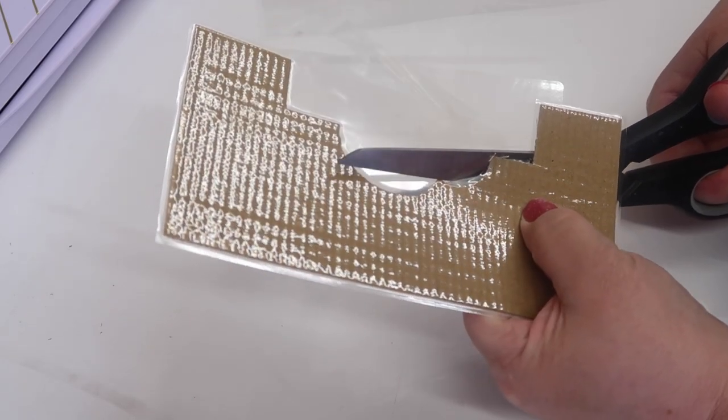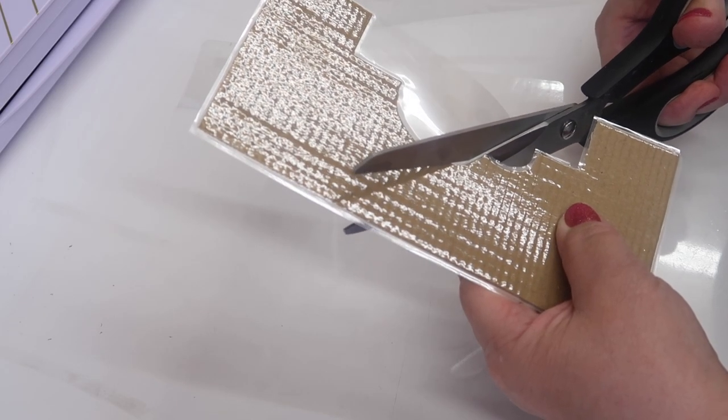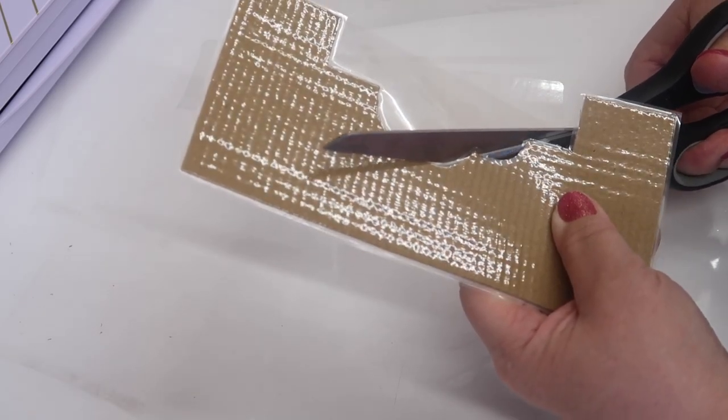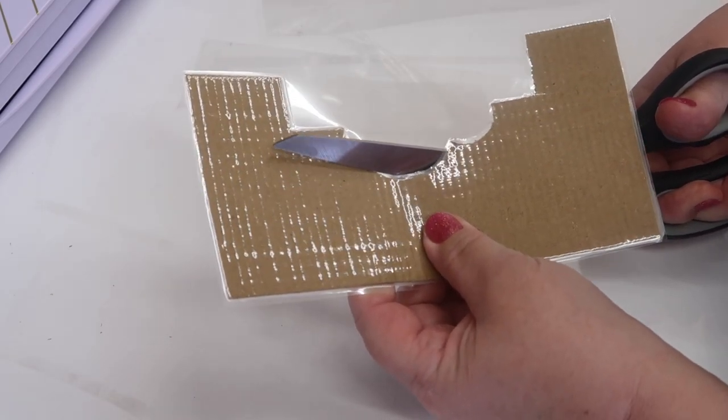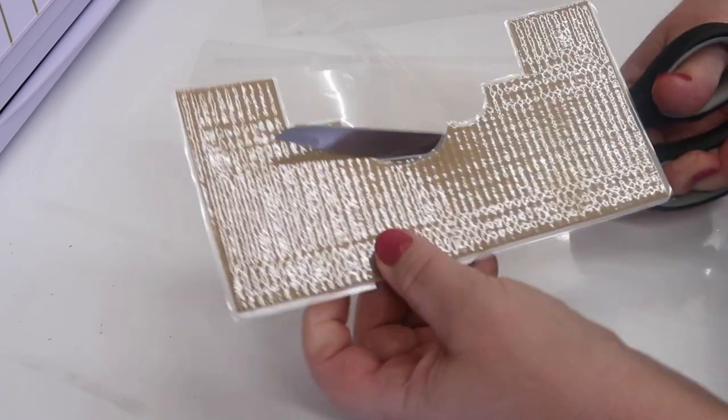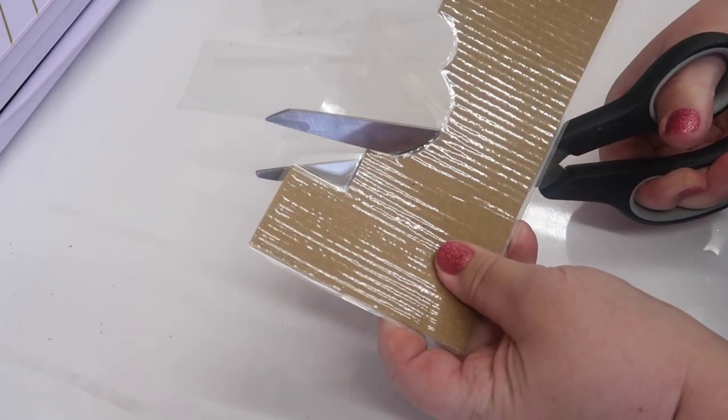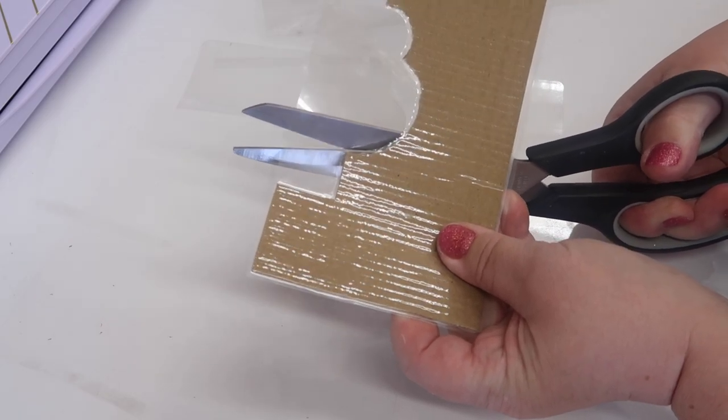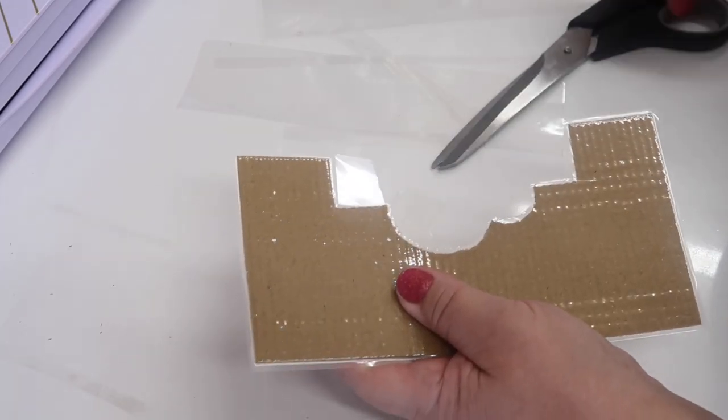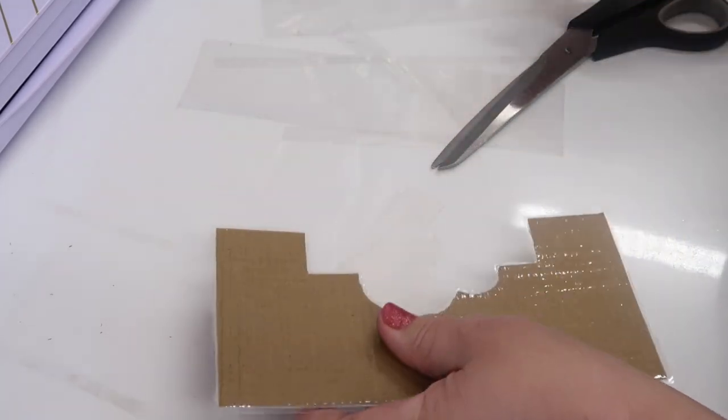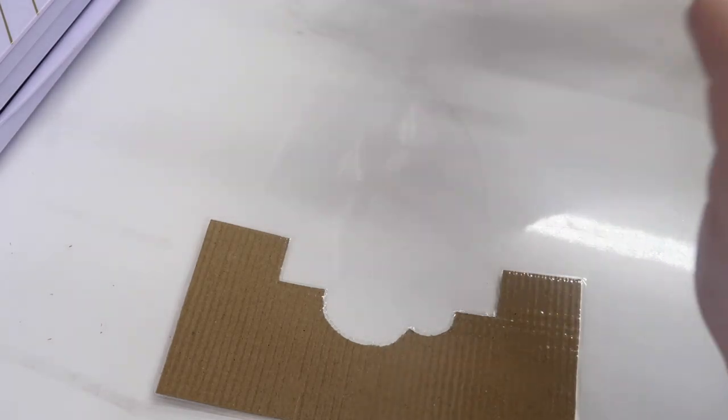And this is the bit that will give you that nice smooth finish on your soap because instead of scraping it with the cardboard we're scraping it with the plastic. Right cut the other one and then we'll see how they fit shall we.